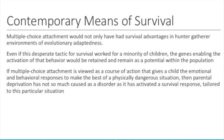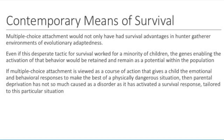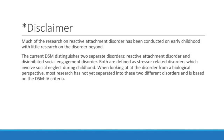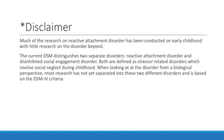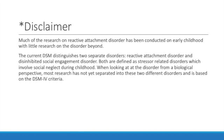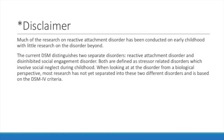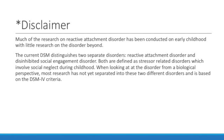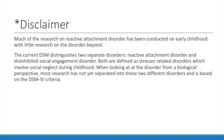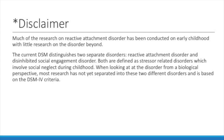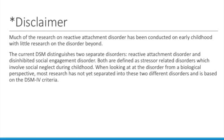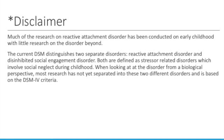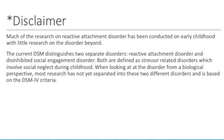A couple of disclaimers. The Balberny study is more of a hypothesis, as they haven't really explored whether or not the gene they talk about actually exists. Also, most of the research on reactive attachment disorder has been conducted on only early childhood, with little research on the disorder beyond. The current DSM-5 distinguishes two separate disorders: reactive attachment disorder and disinhibited social engagement disorder. Both are defined as stressor-related disorders that involve social neglect during childhood. Most research hasn't yet separated into these two different disorders since they were conducted before the DSM-5 came out, based on DSM-4 criteria when both were considered to be reactive attachment disorder.